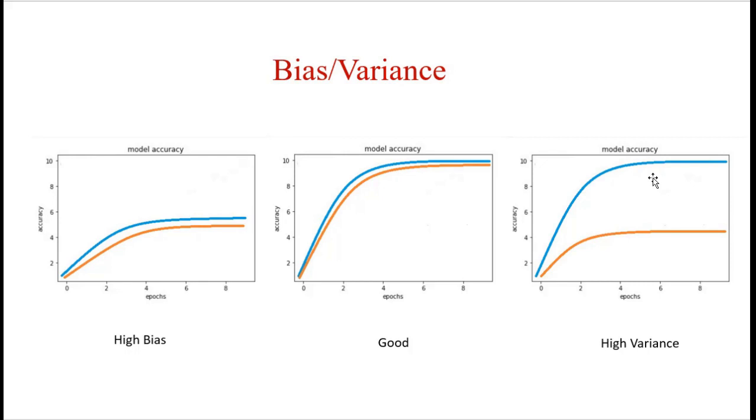Now in the third graph we can see that training accuracy is very high, close to 100%. But when we check the validation accuracy, it is very low compared to the training accuracy, close to 40%. So there is a huge difference.